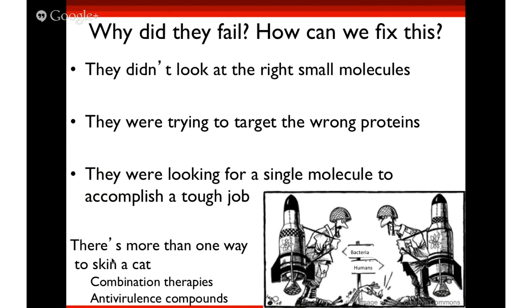So why did they fail? The head scientists came up with a few answers. First, maybe they didn't look at the right small molecules — 530,000 seems like a big collection, but it's actually very small compared to the possible number of small molecules out there. Second, maybe they were trying to target the wrong proteins. And finally, they were looking for one antibiotic to do the very tough job of killing a bacterial cell alone. I'm going to talk about some alternative strategies to equip ourselves in this arms race back and forth between bacteria and humans.